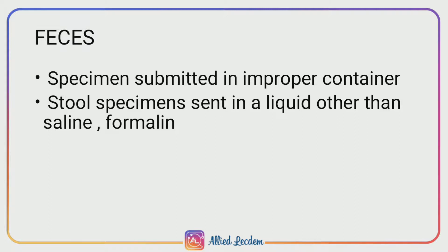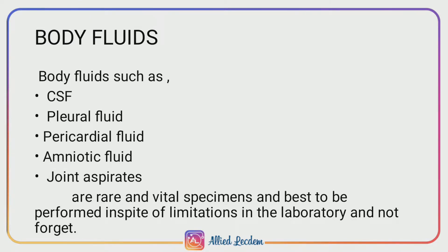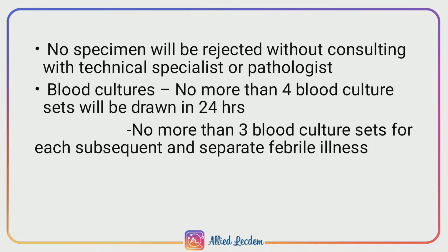Stool specimens sent in a liquid other than saline or formalin should be rejected. Body fluids such as CSF (cerebrospinal fluid), pleural fluid (fluid that accumulates in the lungs), pericardial fluid (secreted by the serous layer of the pericardium — the layer of the heart), amniotic fluid (a clear yellow fluid inside the amniotic sac), and joint aspirates (fluid from the space around the joints) are rare and vital specimens and are best processed despite limitations. No specimen will be rejected without consulting a technical specialist or pathologist.